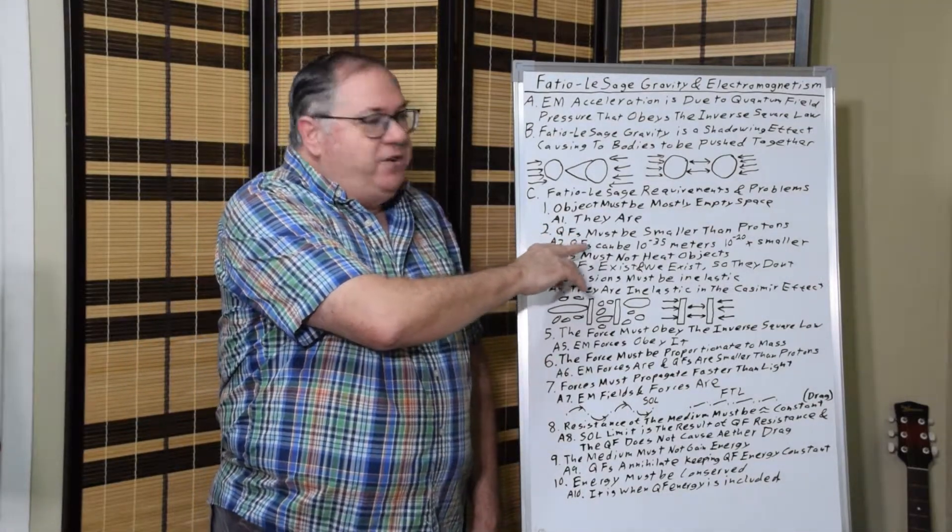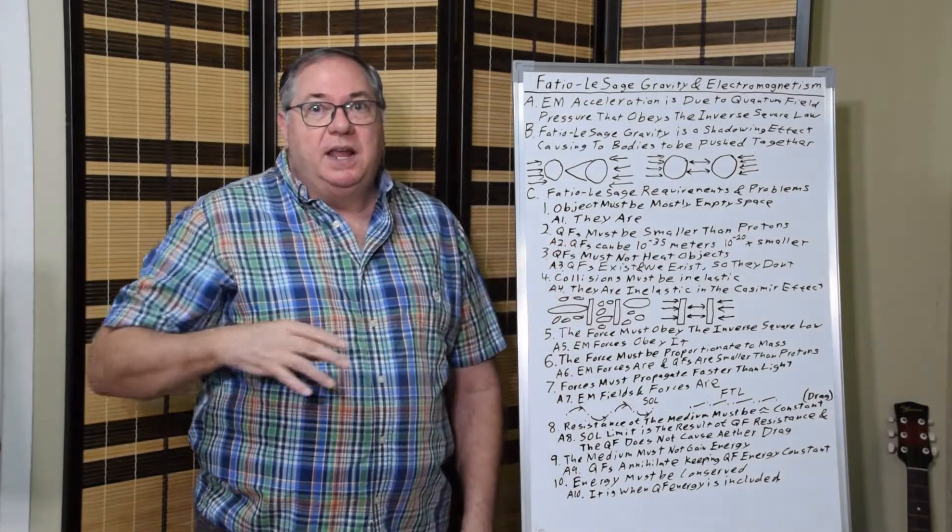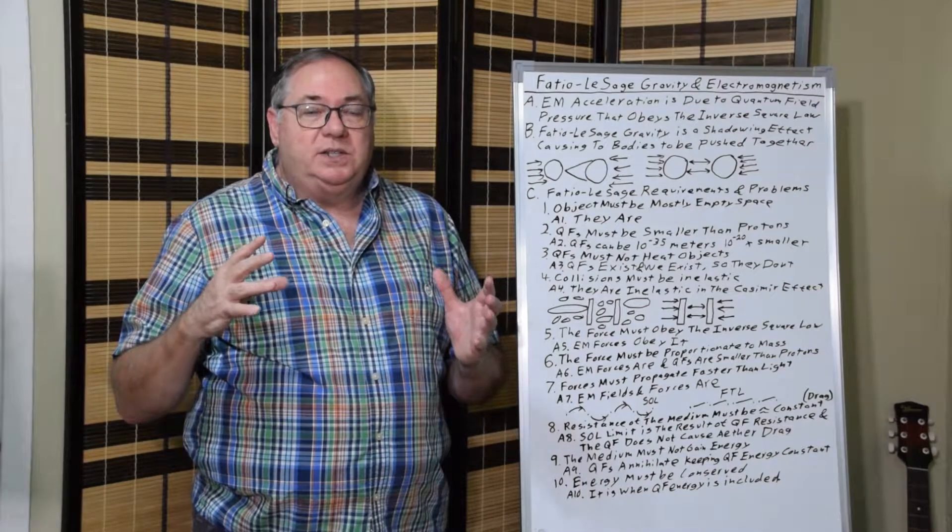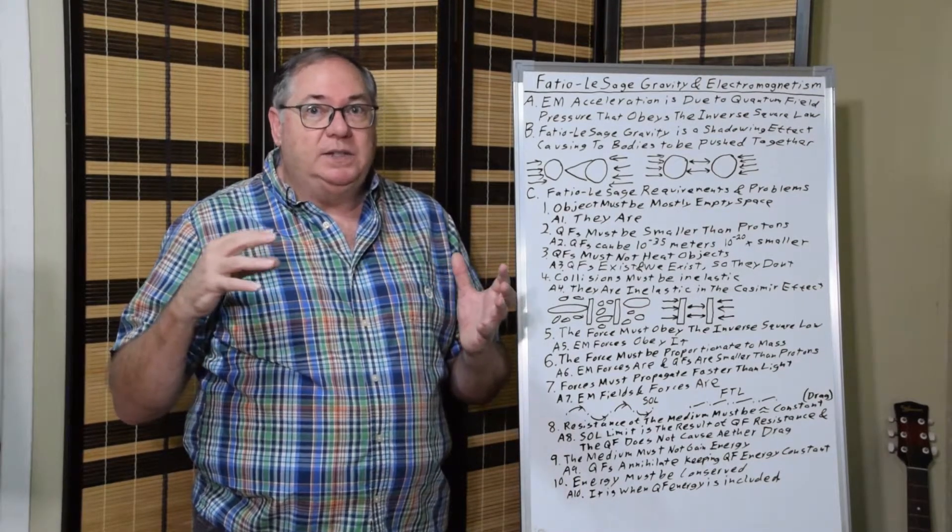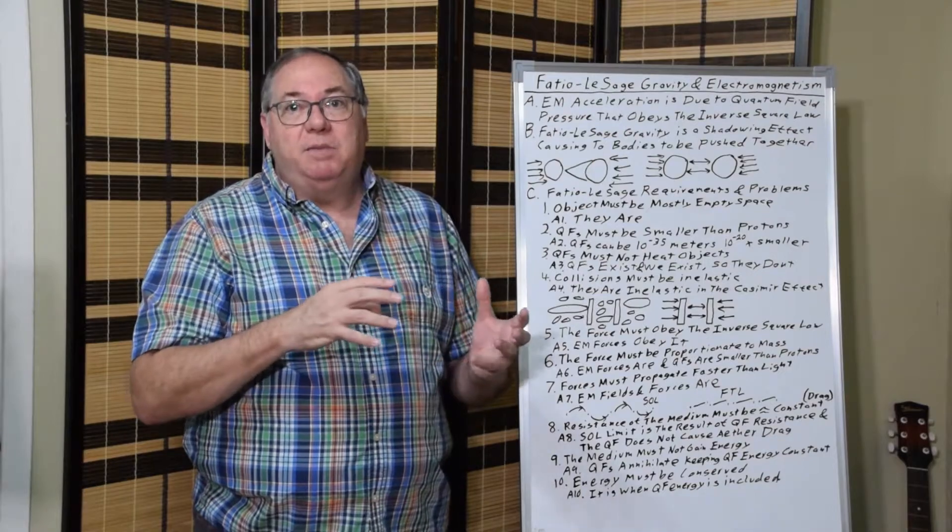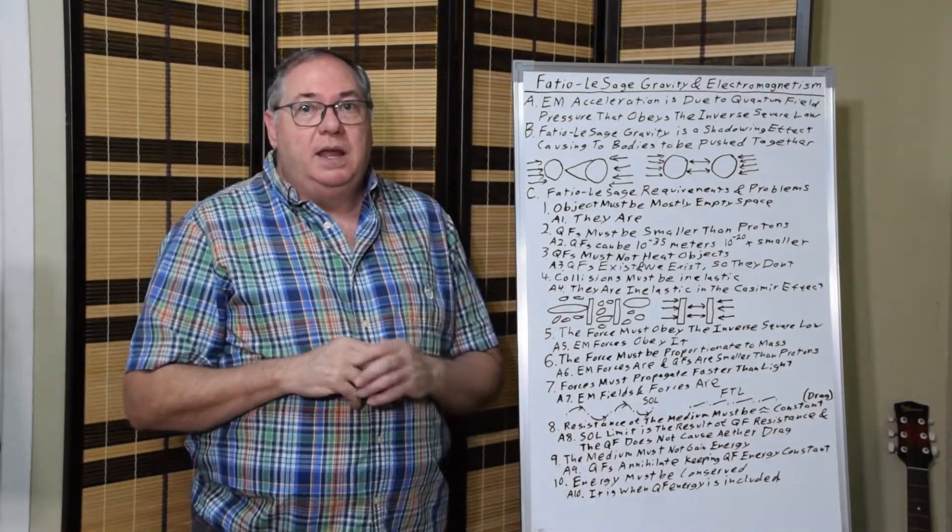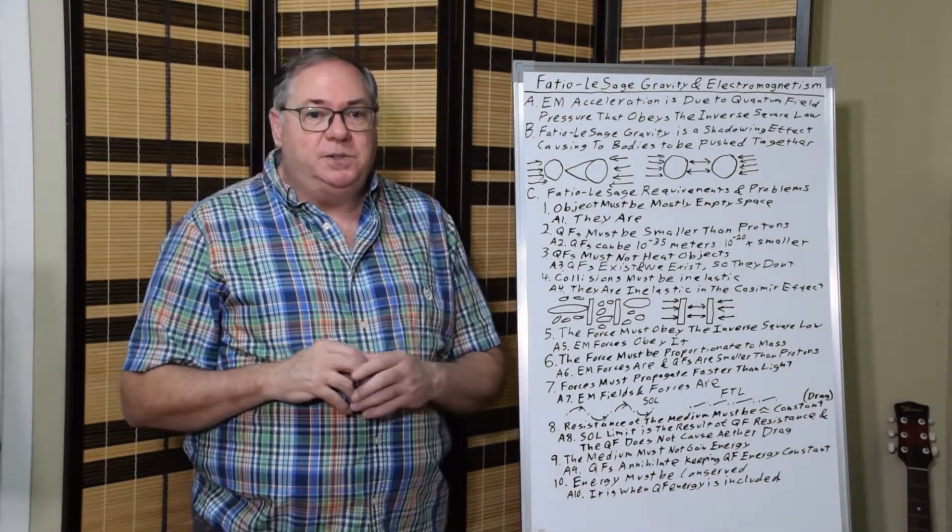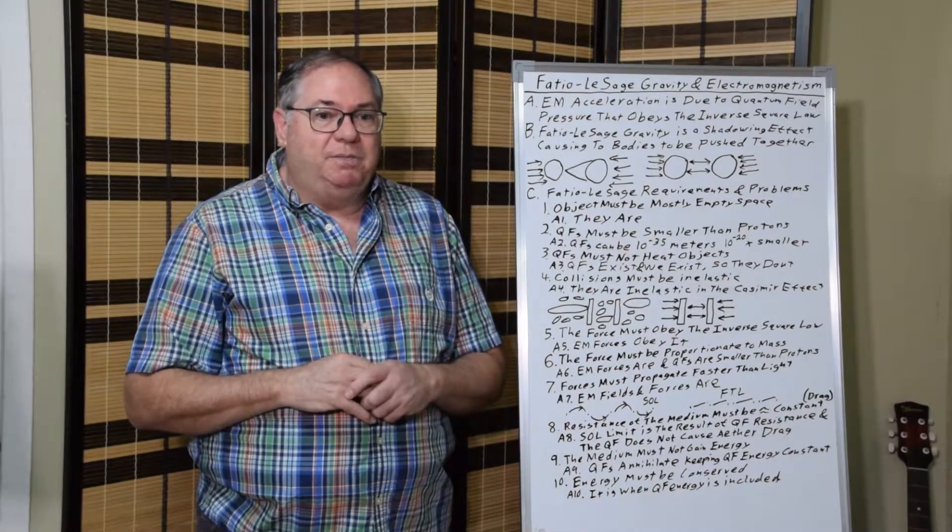And why that is, is because of the ratio of the sizes. The quantum fluctuations can be so small that they just penetrate throughout the medium, throughout an object, because they're 20 orders of magnitude smaller, or up to 20 orders of magnitude smaller.